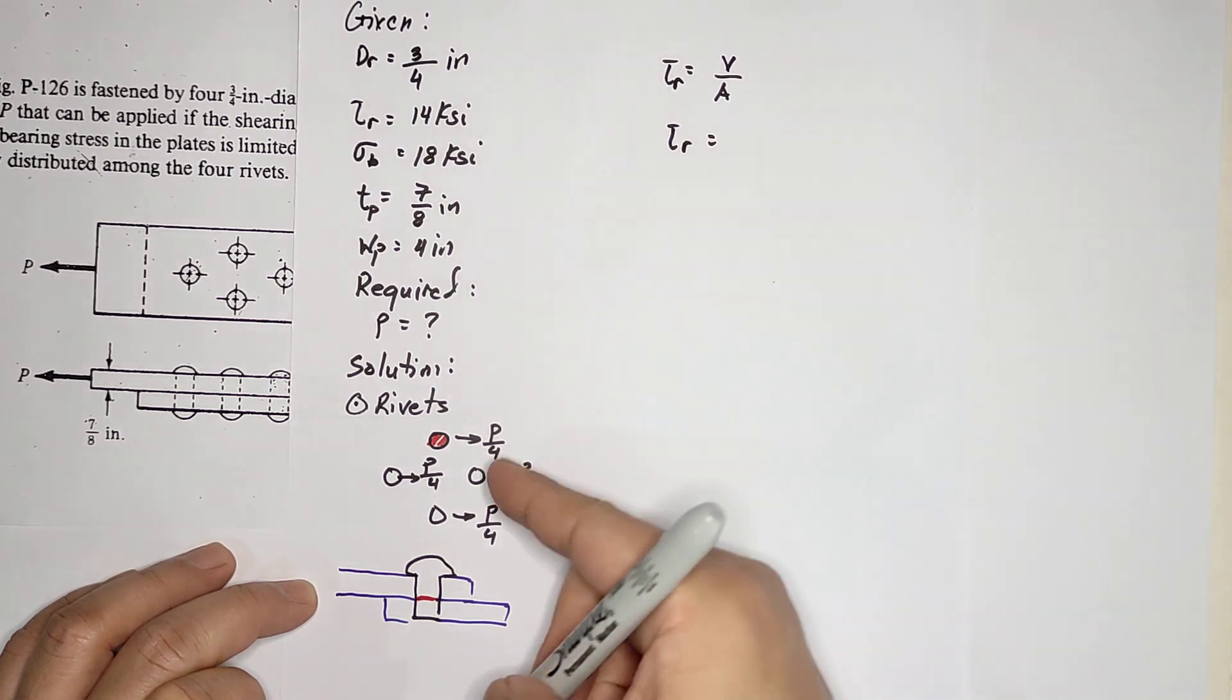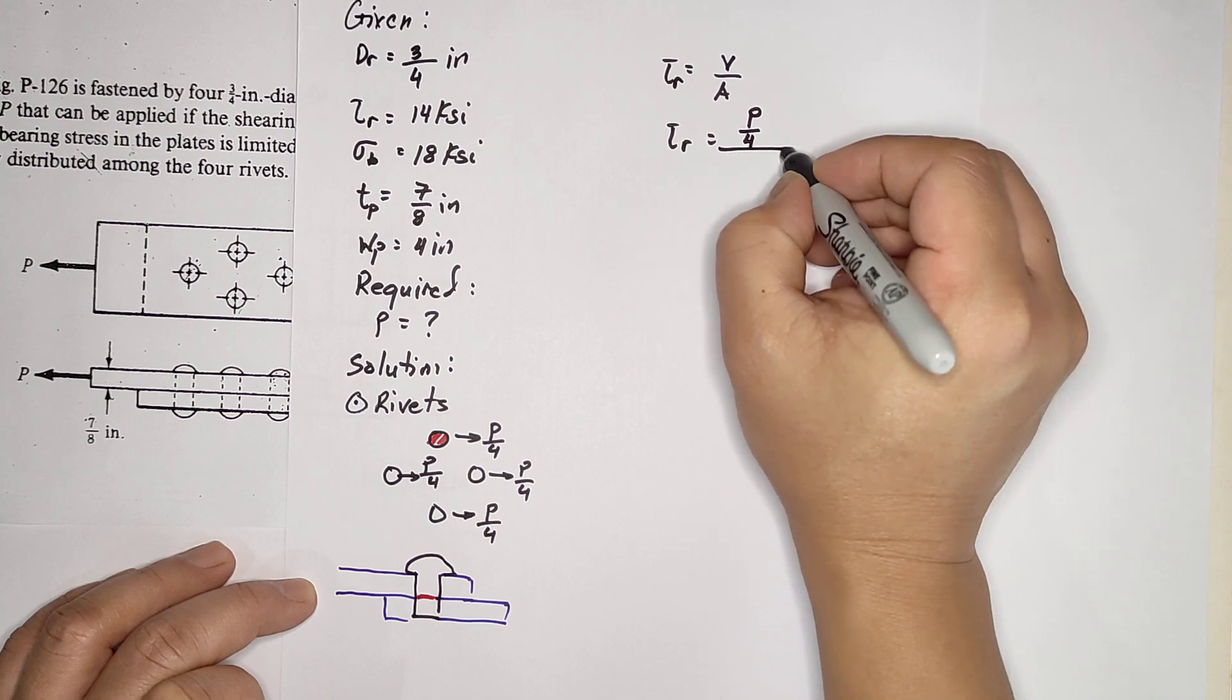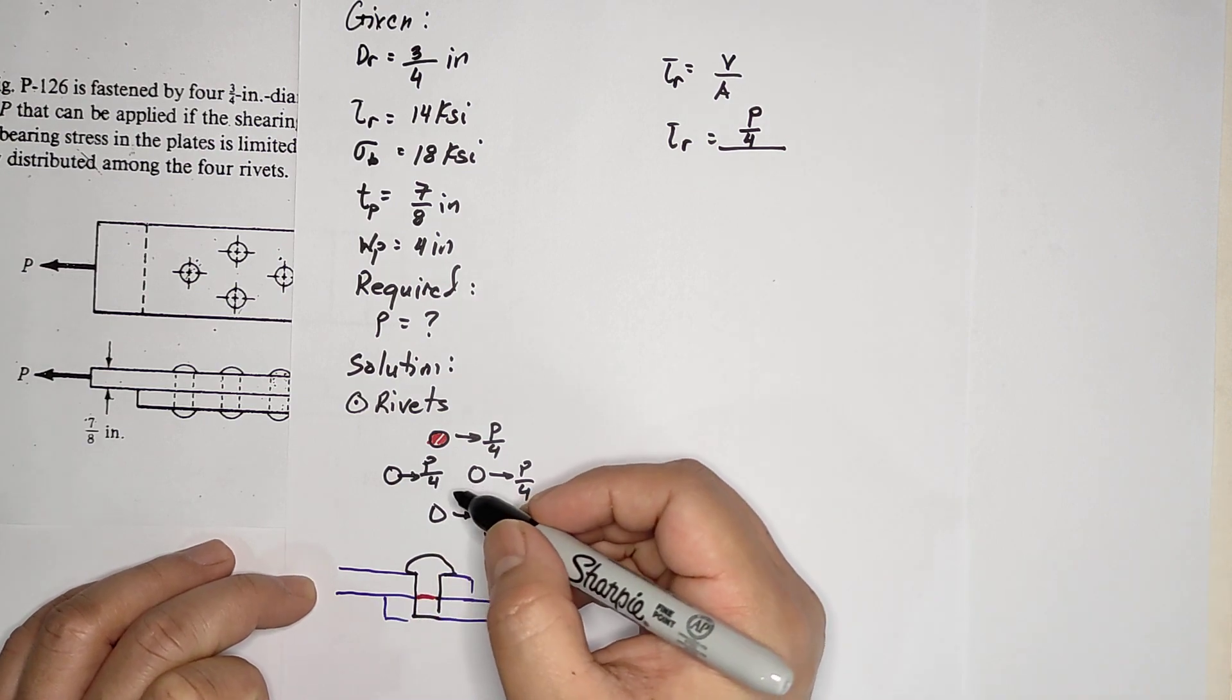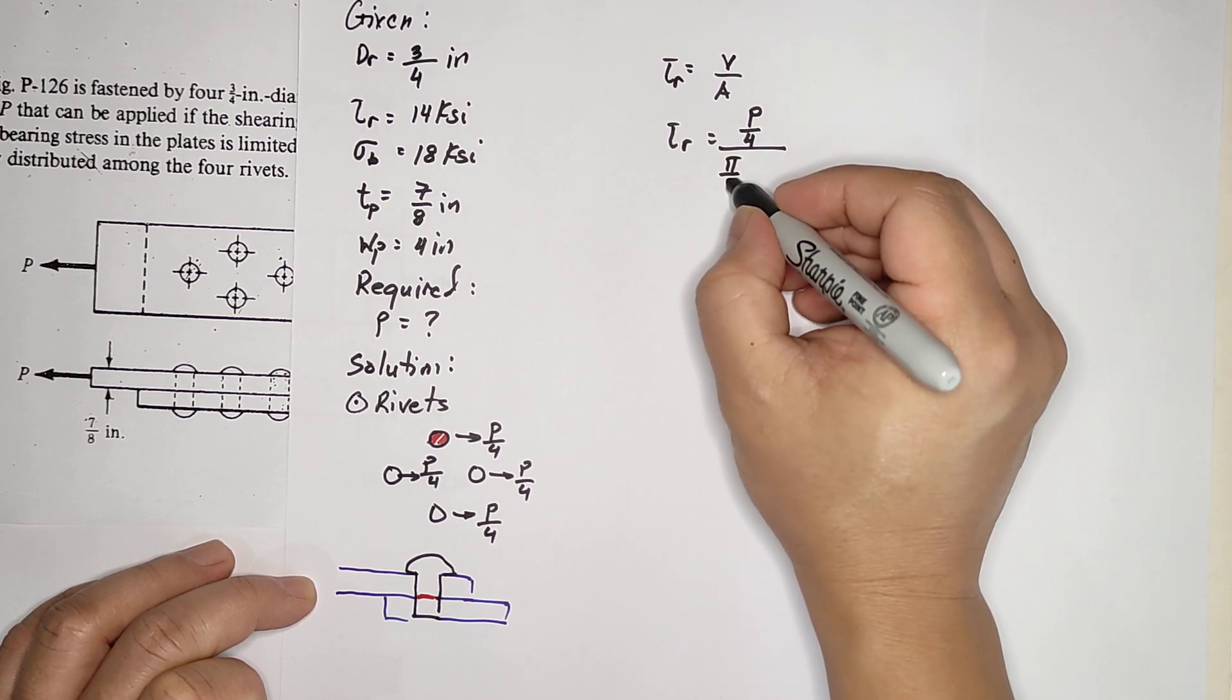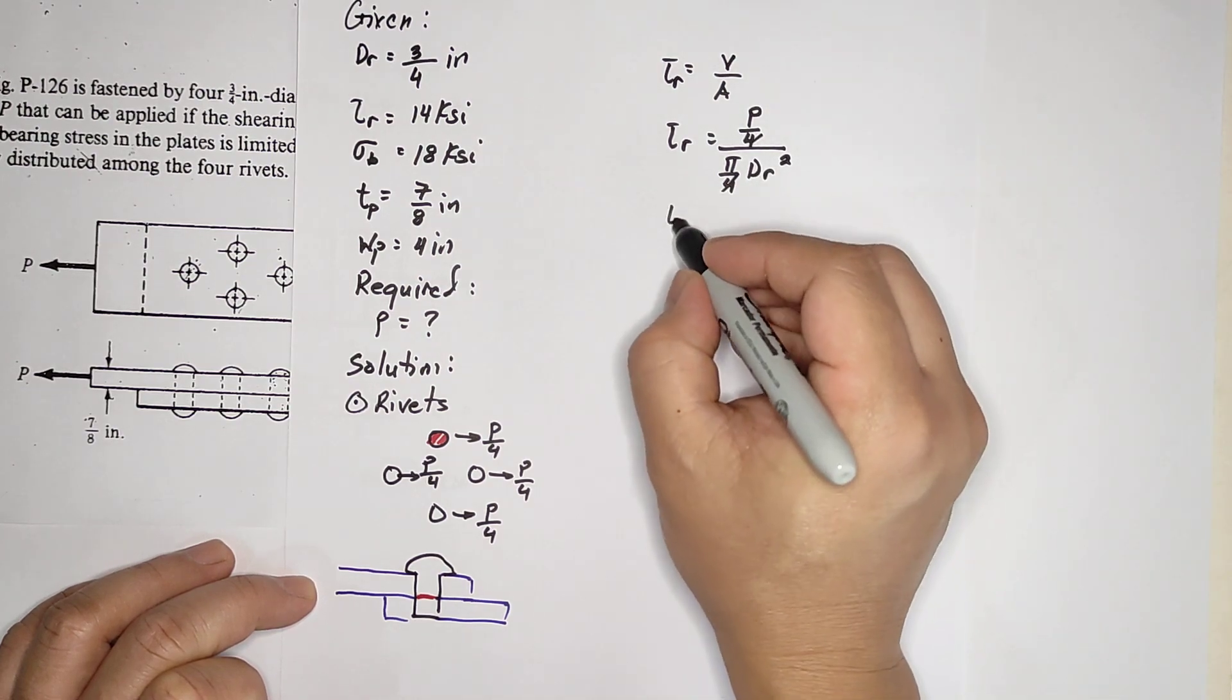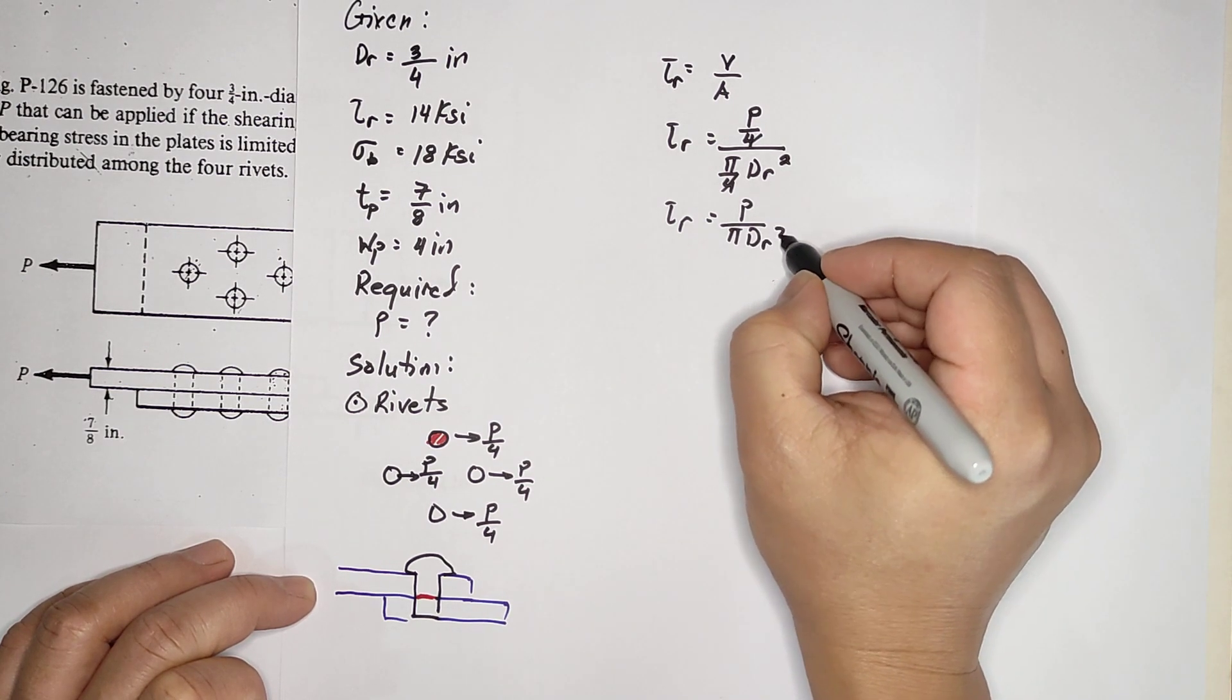That V is equivalent to P over 4. So P over 4 divided by area - what's the area? The area of a circle, because this is the sheared area. So you have P/4 divided by π/4 × dr². This cancels, so you're left with P = τ × π × dr².